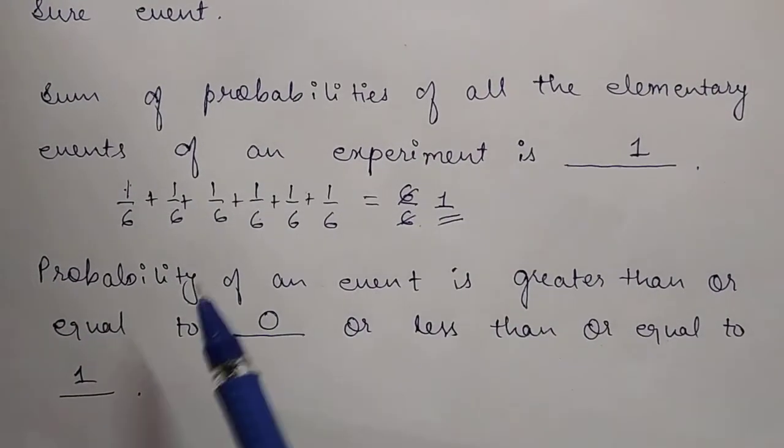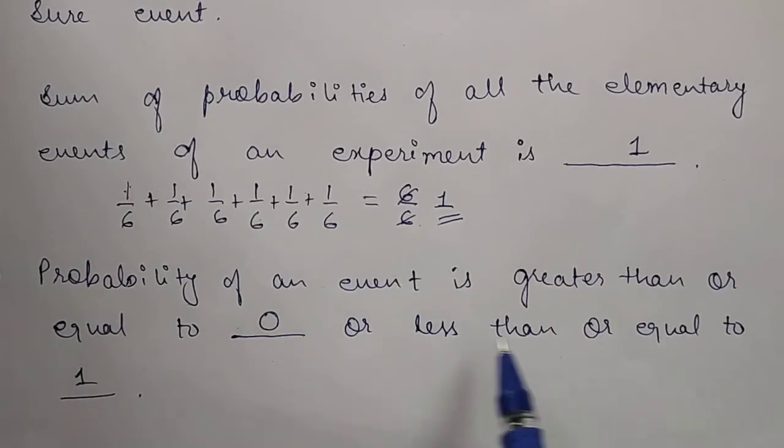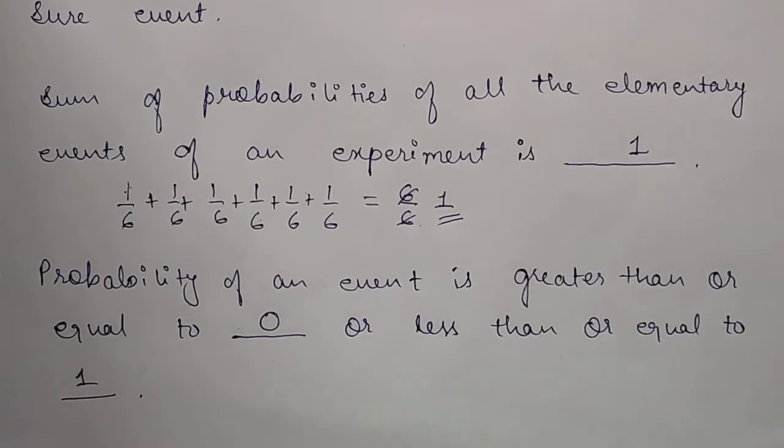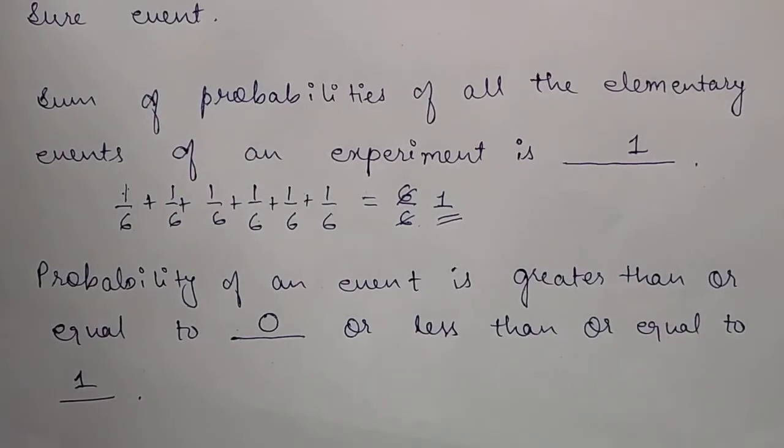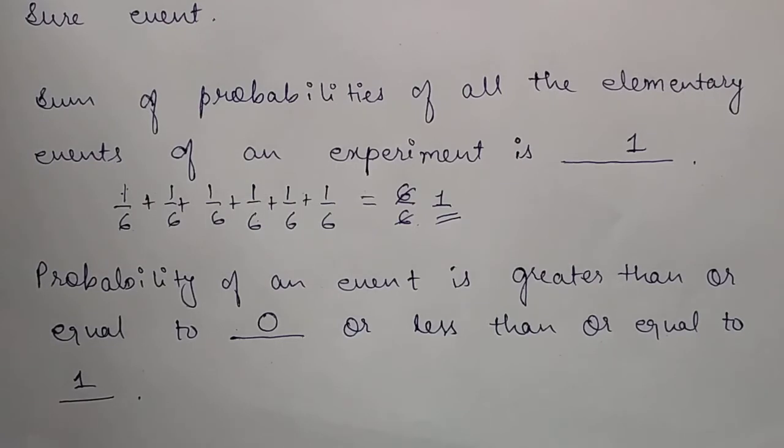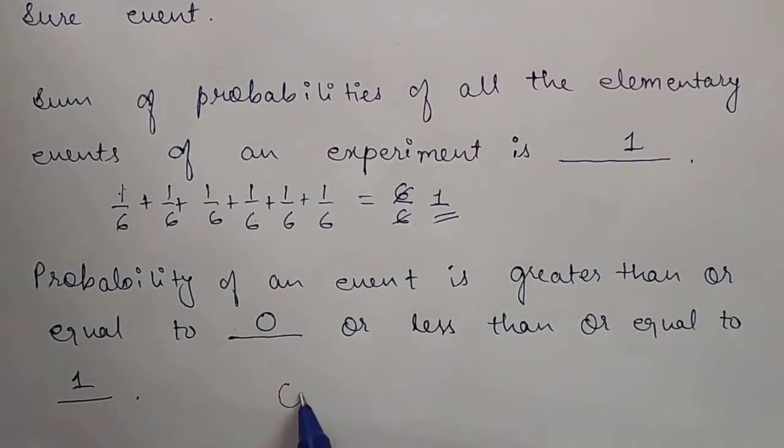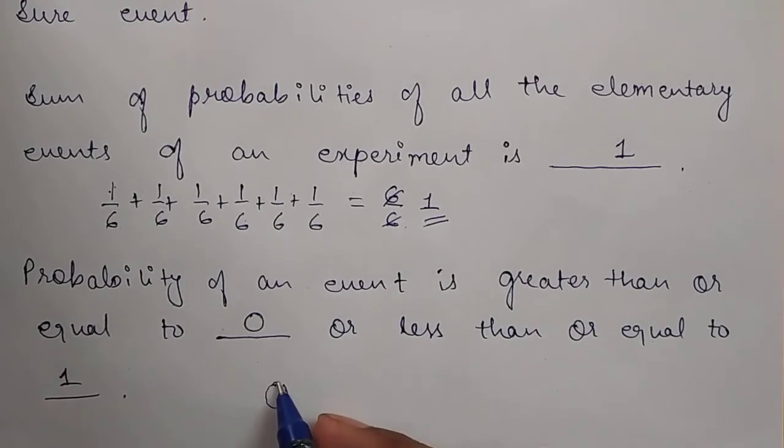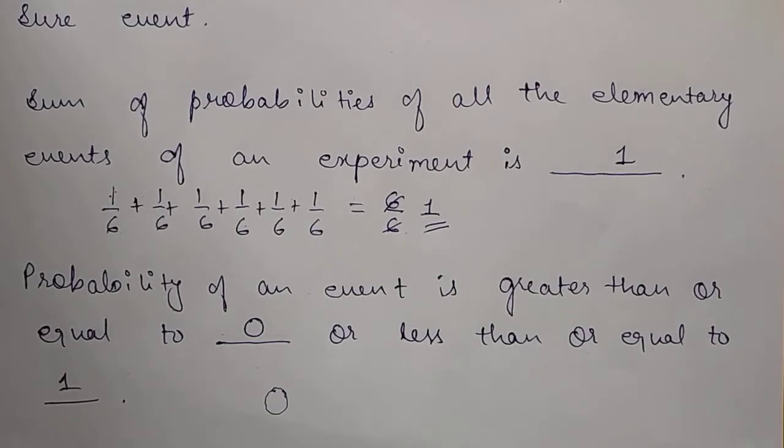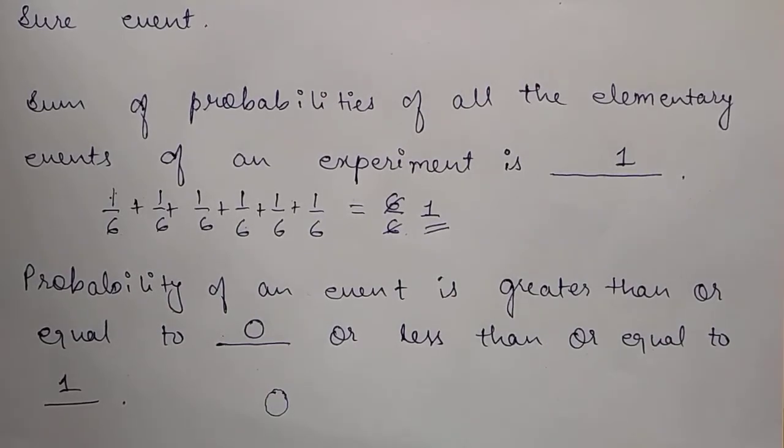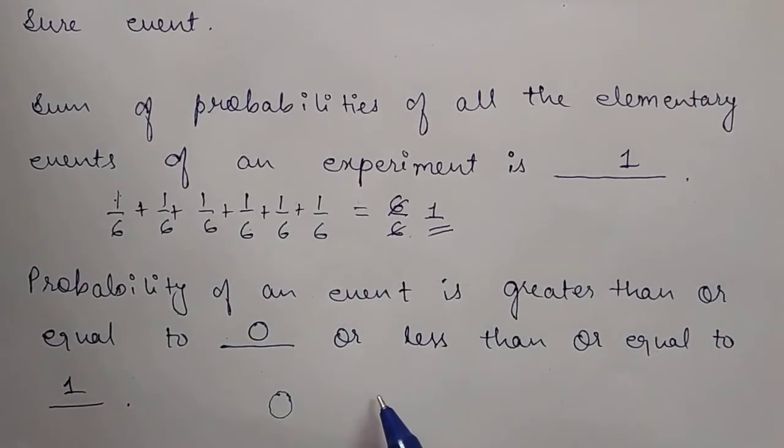Now the last question. The probability of an event is greater than or equal to 0 or less than or equal to 1. How is this? We said that if an event cannot happen at all, it's absolutely impossible, then what will its probability be? It will be zero. This is certain - it cannot be more than this, it cannot be less than zero. Zero is the maximum limit for an impossible event.